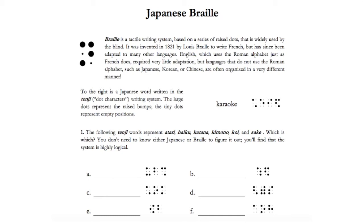Japanese braille is also known as tenji, dark characters. The question requires us to decipher the tenji from the word karaoke to match the below tenji characters to words and then some translations.